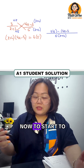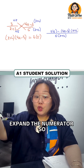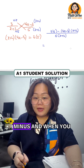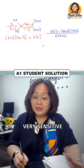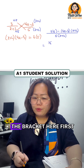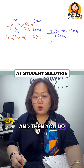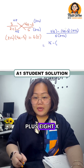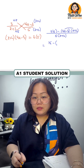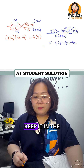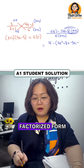Now expand the numerator. 3 times 5 is 15, then minus — and because there's a minus, it's very sensitive, so make sure you use brackets. Then do your rainbow: 4x² + 8x − 3x − 6. Don't forget your denominator — keep it in factorized form.